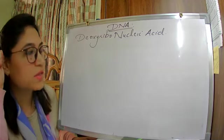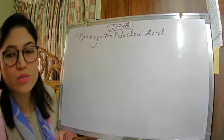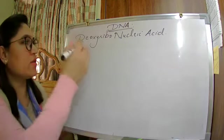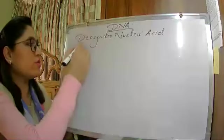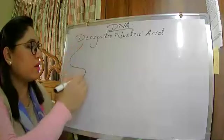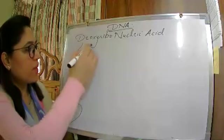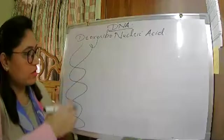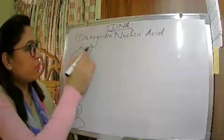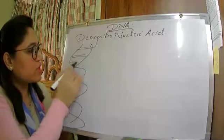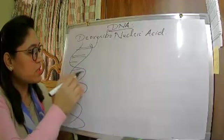What does the structure of DNA look like? It is a double helical structure. Two strands run parallel to each other, and in between we have nitrogenous bases.